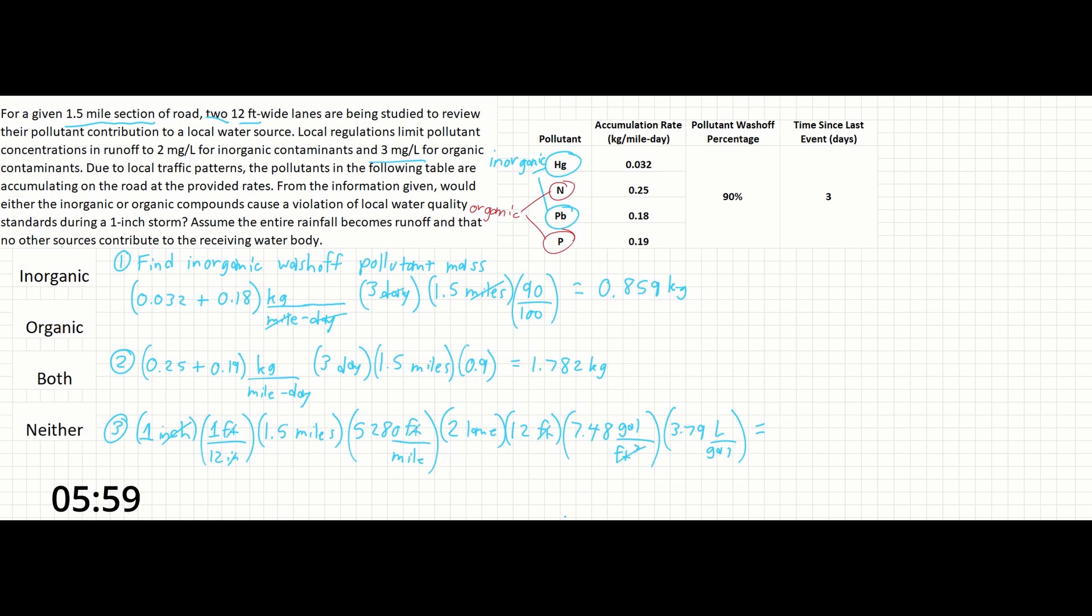Feet 1, 2, and 3 will cancel with cubic feet. This should be 12 feet per lane so lane and lane cancel. Miles cancel. And gallons cancel. So all we have left are liters here. And that's going to be about 449,051 liters.